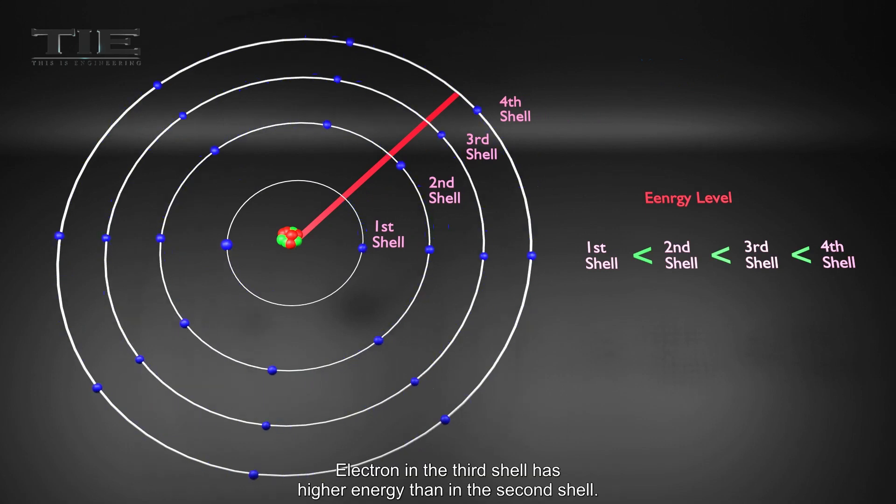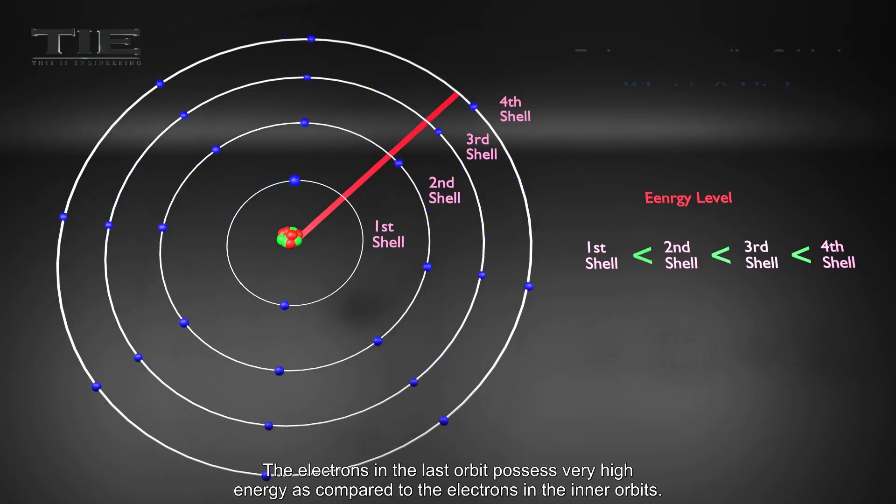Electron in the third shell has higher energy than in the second shell. The electrons in the last orbit possess very high energy as compared to the electrons in the inner orbits.